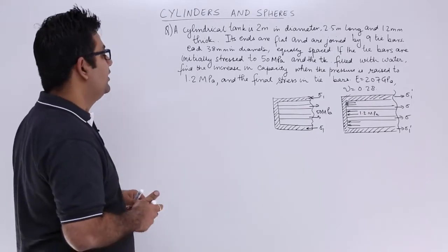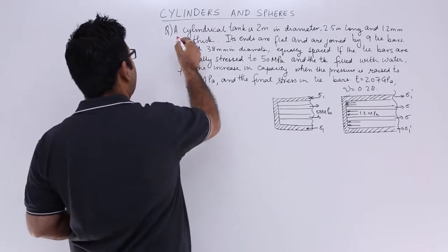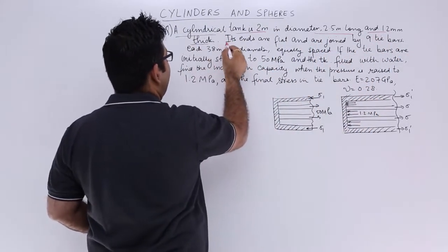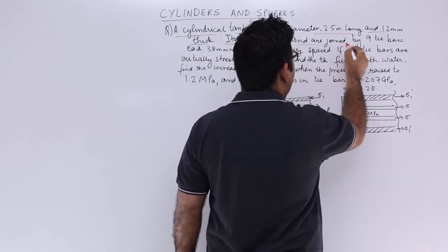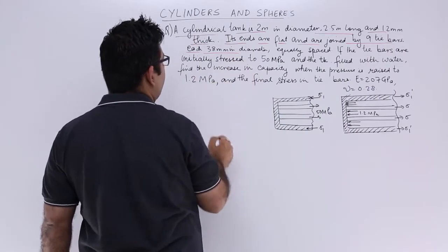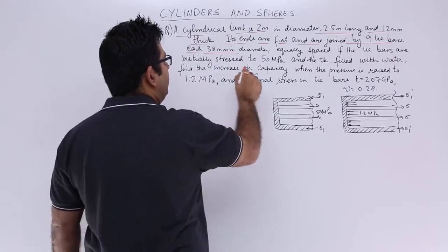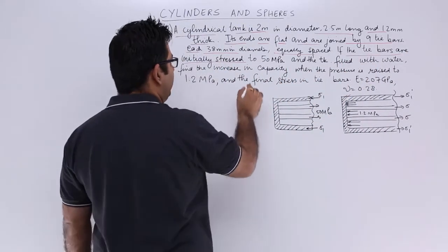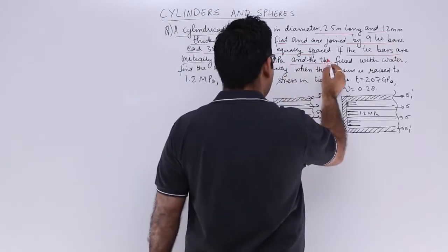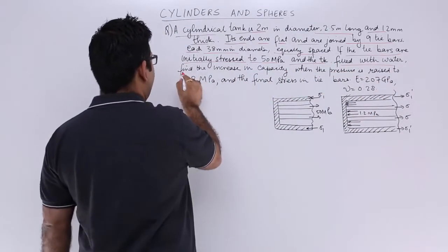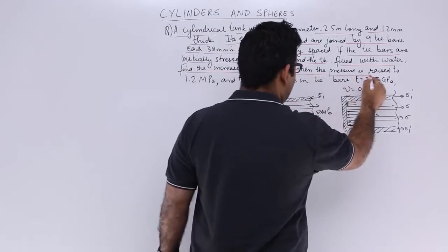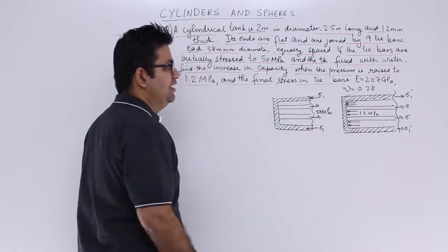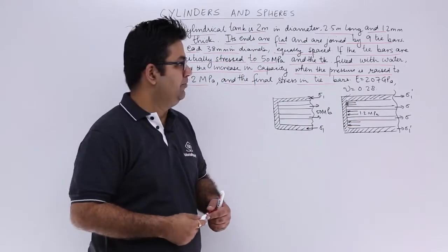Now let us look at a question on thin cylinders. A cylindrical tank is 2 meter in diameter, 2.5 meter long and 12 mm thick. Its ends are flat and are joined by 9 tie bars each 38 mm diameter equally spaced. The tie bars are initially stressed to 50 MPa and the tank is filled with water. We need to find the increase in capacity when the pressure is raised to 1.2 MPa, and the final stress in the tie bars.